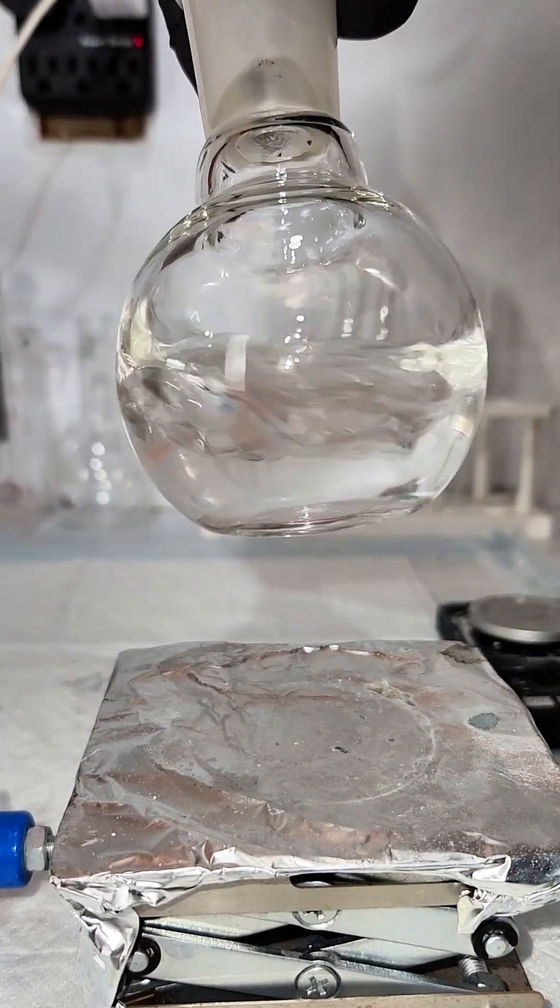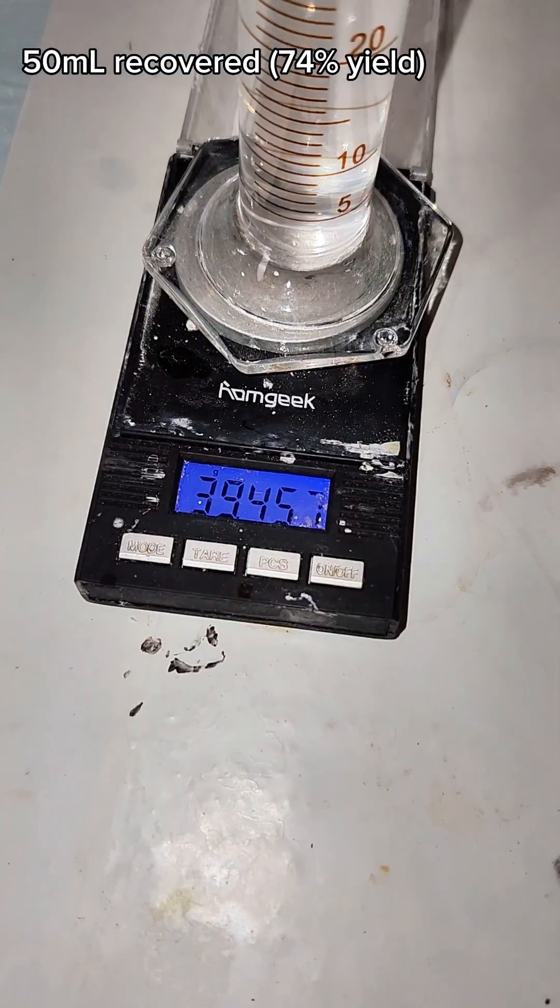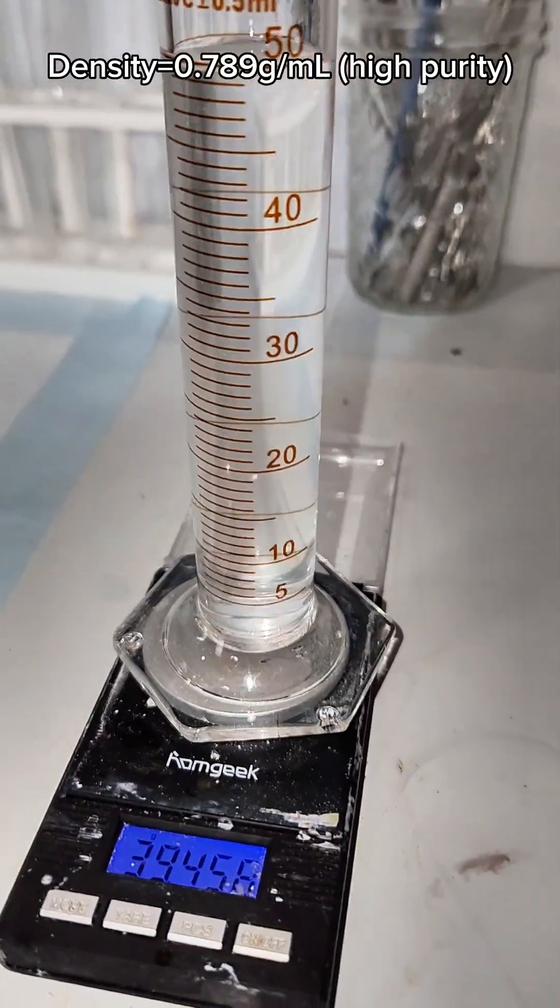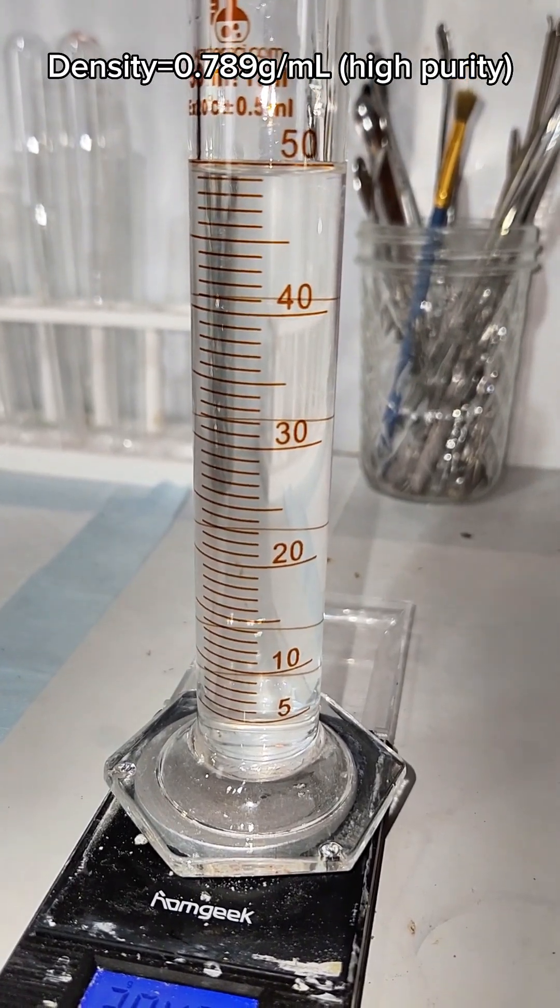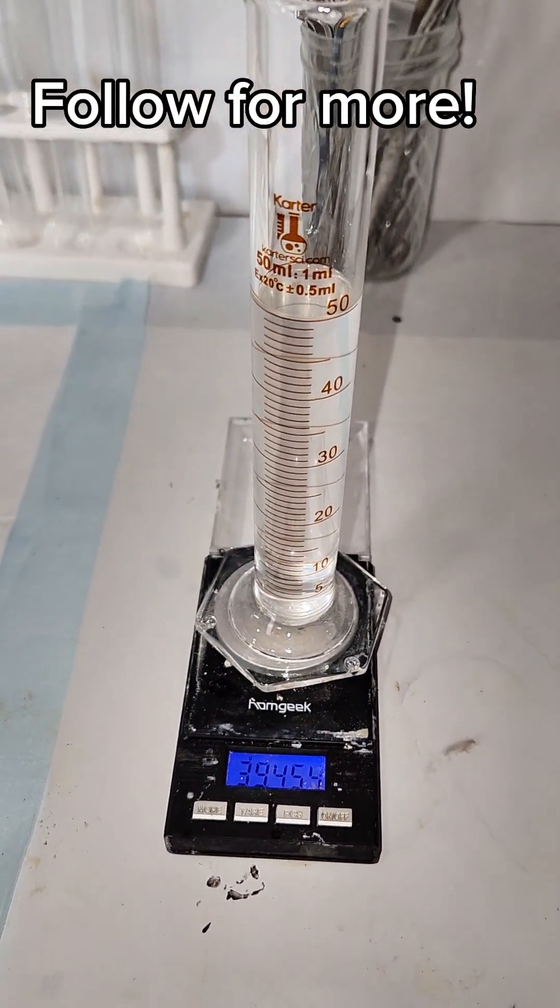In the end though, I'm left with just about 50ml of pure 100% ethanol, which is about a 74% recovery. The calculated density also indicates extremely high purity. And that is how you get alcohol out of wine.